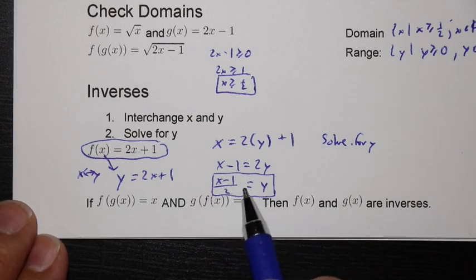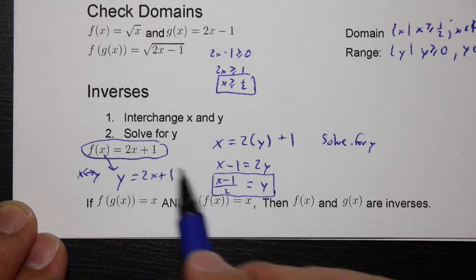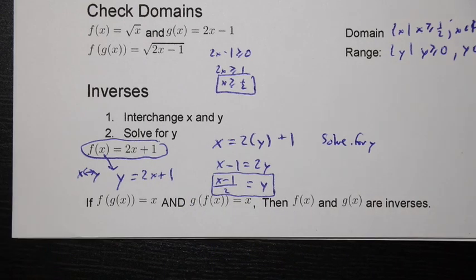You can also prove that that's the inverse. If you take a look at that as g of x, if you did f of g of x and you found that that was equal to x, and g of f of x, you found that also equal to x, then your f and g functions would be proven to be inverses.